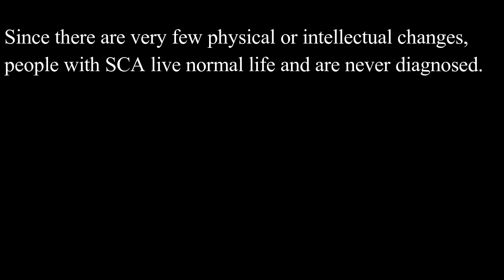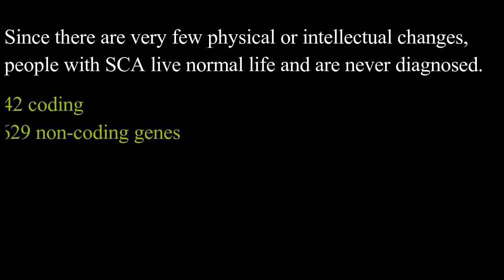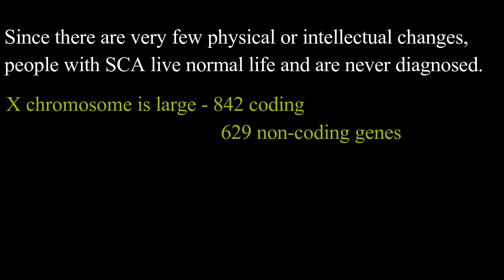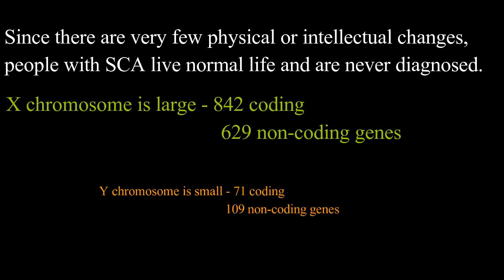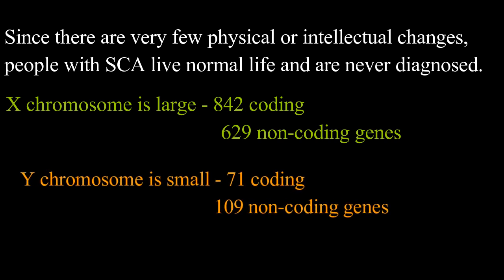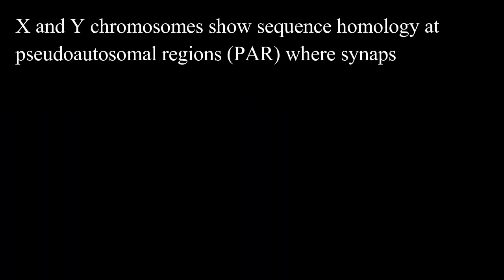The X and Y chromosomes differ in their size as well as number of genes. The X chromosome is large and has 842 coding and 629 non-coding genes, while the Y chromosome is small and has just 71 coding and 109 non-coding genes. X and Y chromosomes show sequence homology at a very short region at the end of the short and long arm, called pseudoautosomal regions, where synapsis occurs during meiosis.